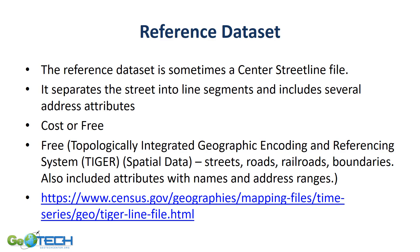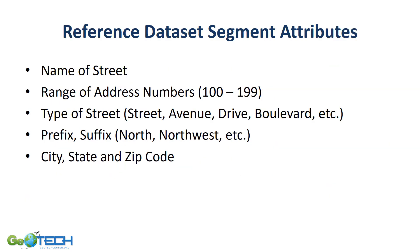What are some of the attributes that come with a center street line file? The first one is the name of the street. Then you'll have a range of addresses — within those line segments, you will have the starting point, which may be 100, and the ending point, which may be 199. You will have the type of street: is it a street, an avenue, a drive, a boulevard? Also, you may have a prefix and suffix with your address, such as North Main Street. And finally, you will have a city, state, and zip code.